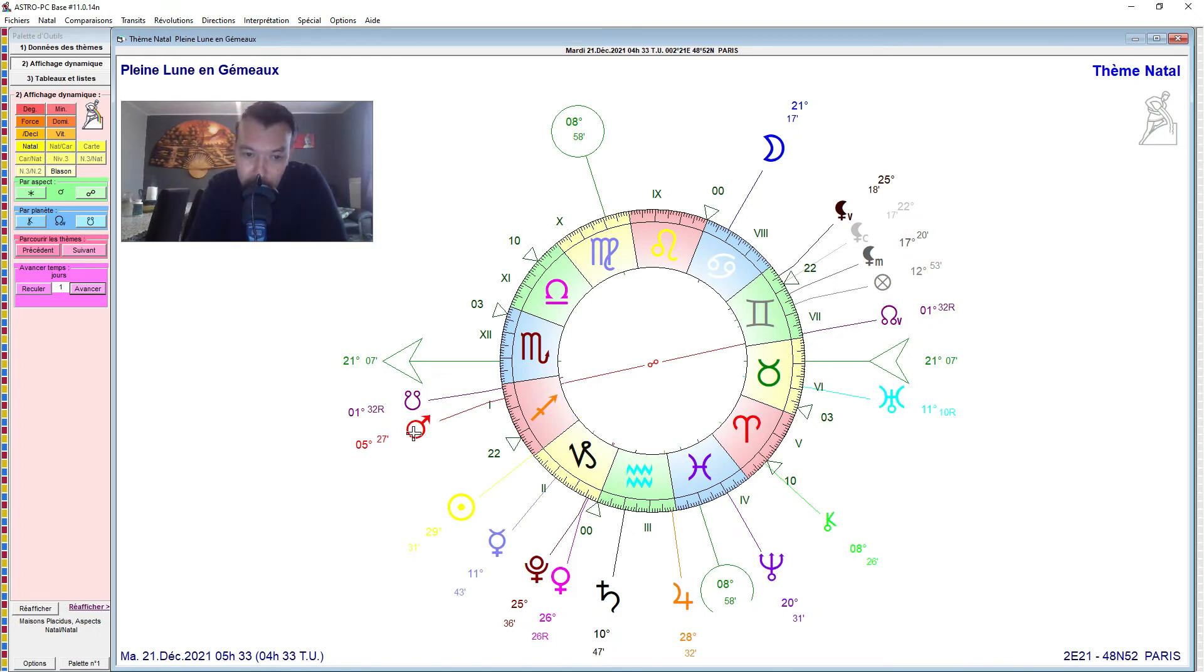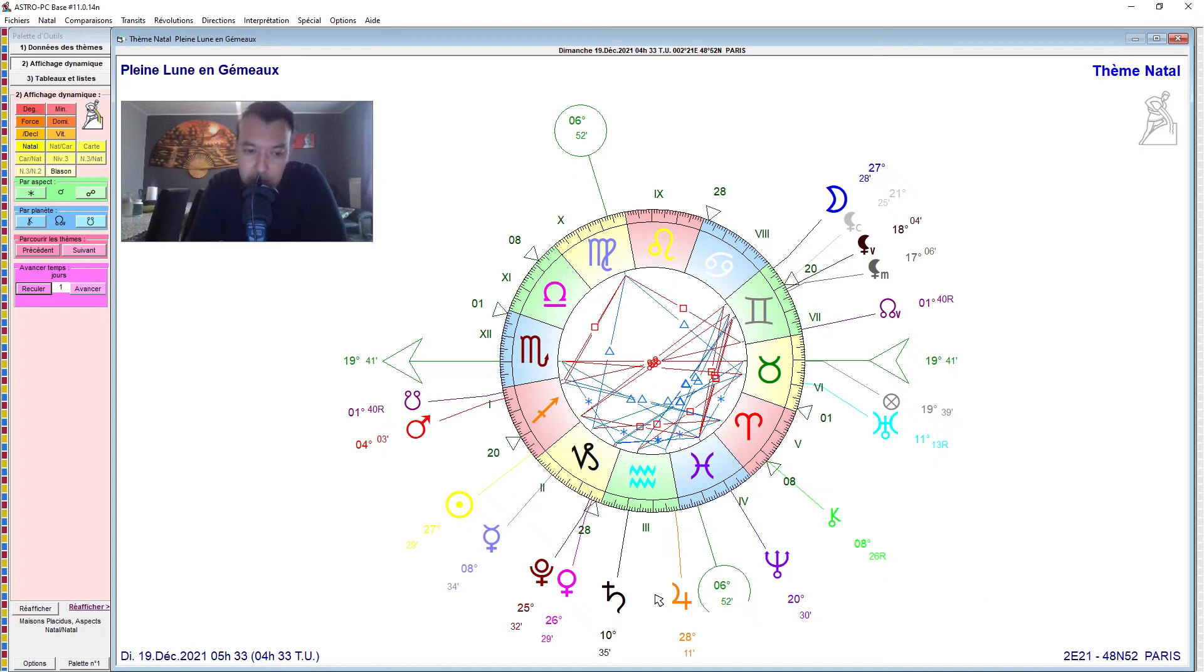Toutes les planètes lentes sont plus ou moins directes, il reste que Uranus qui rétrograde. Il passera, justement, direct, un mois après cette pleine lune, le 19 décembre, donc 19 janvier, Uranus reviendra direct. Donc il se passera quelque chose, un événement peut-être marquant au niveau imprévu, là, à ce moment-là, donc à suivre. Qu'est-ce qu'il va y avoir ? On regardera peut-être la nouvelle lune à ce moment-là, et la future pleine lune aussi.